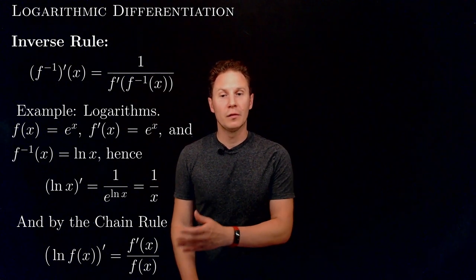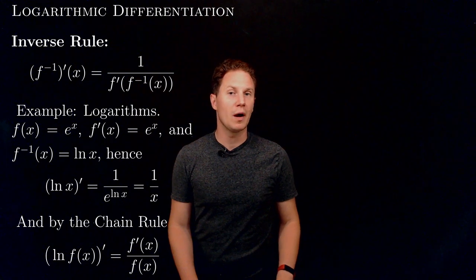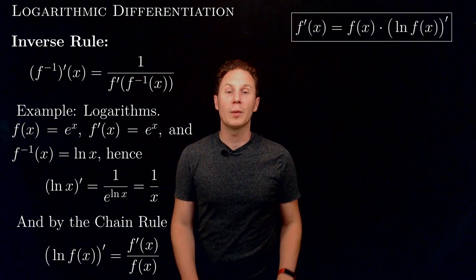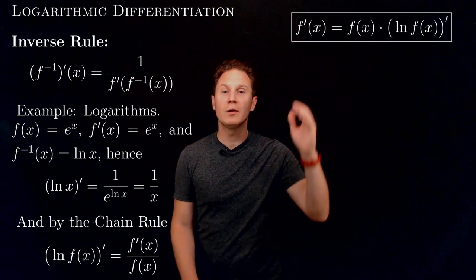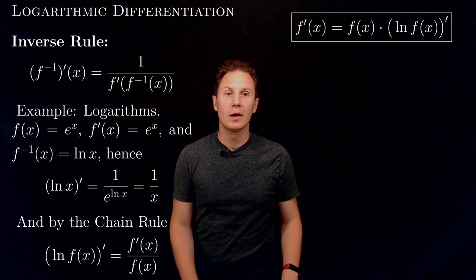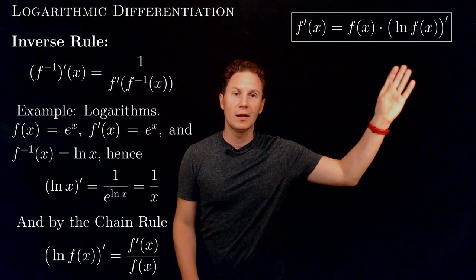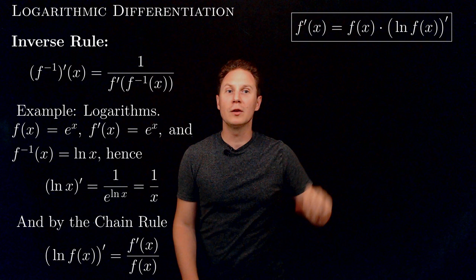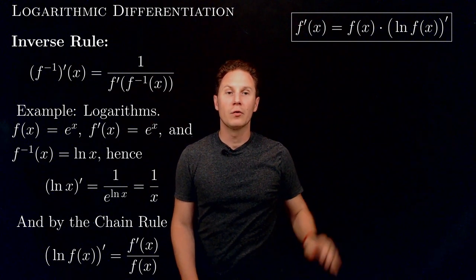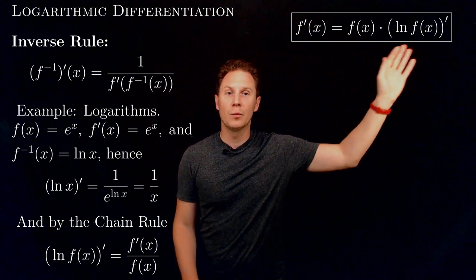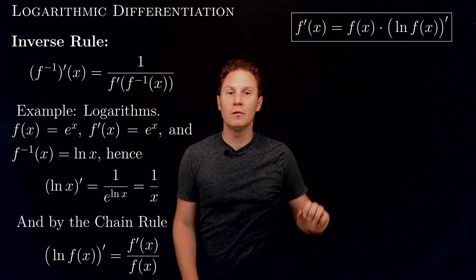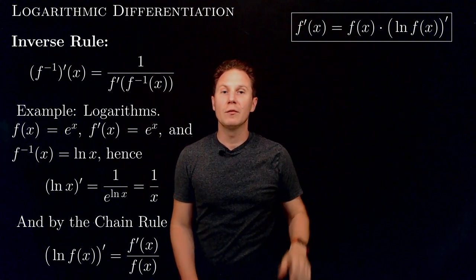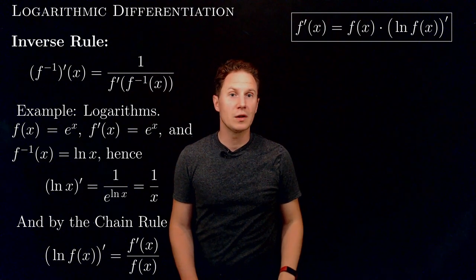Now if we multiply both sides of this relation by f of x, we get an expression for the derivative of f involving the derivative of the natural logarithm of f. So if it's easier to compute that derivative, we can still obtain the derivative of the function itself.